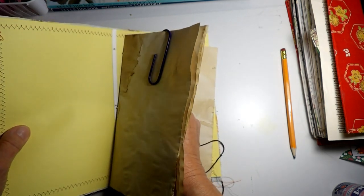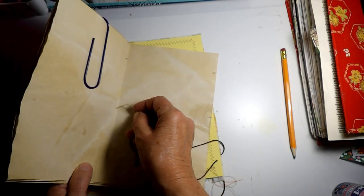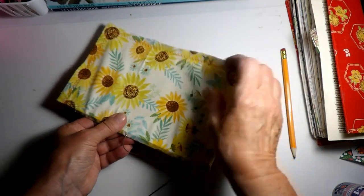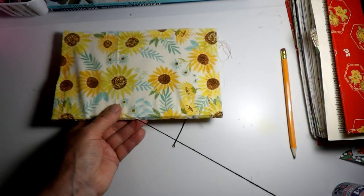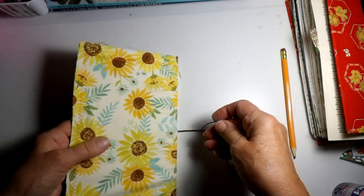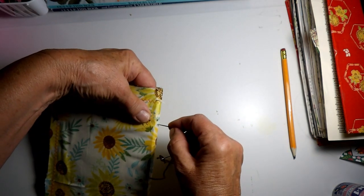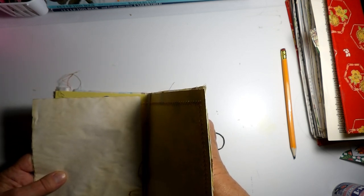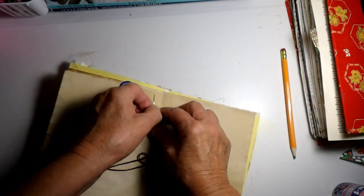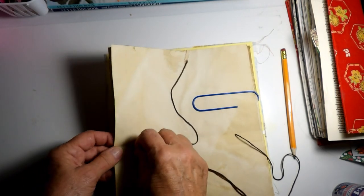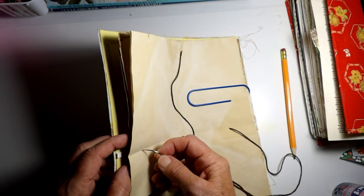Some people prefer a straight needle, but I actually do prefer a rounded needle for attaching the signatures to the spine. I thought brown would be a nice accent color with the sunflowers. Okay, it's not that difficult when you only have one small signature.